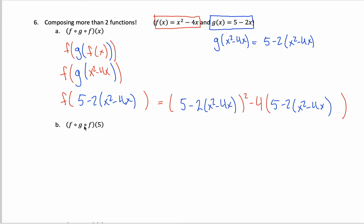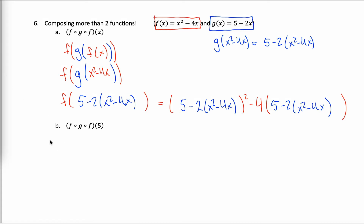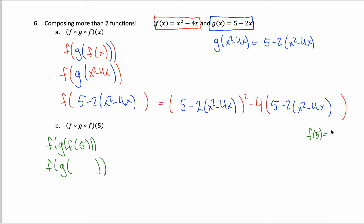Let's look at another example: f of g of f of 5. There are two ways to solve this. The first option is to rewrite it with nested parentheses and work from the inside out. Figure out what f of 5 is first, leaving the outer f and g alone. Copying f of x but changing all x's to 5: 5 squared minus 4 times 5 is 25 minus 20, which equals 5. So f of 5 is 5, and we can replace that innermost part with the number 5.